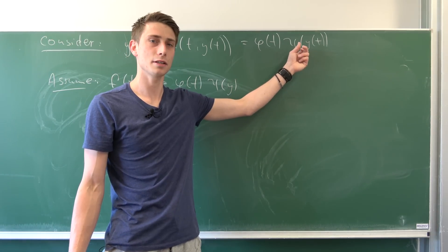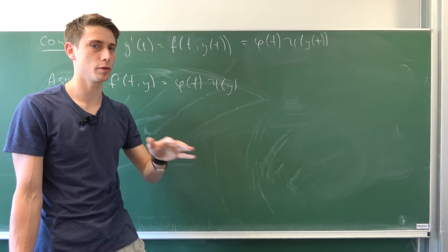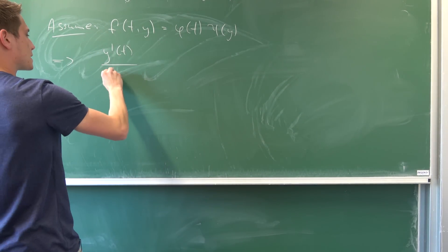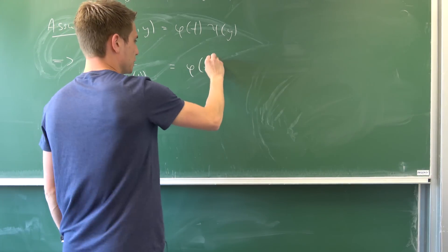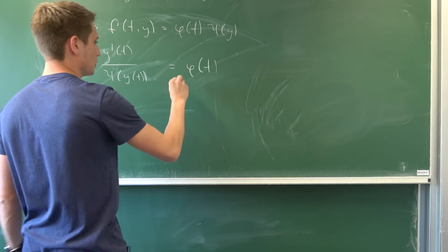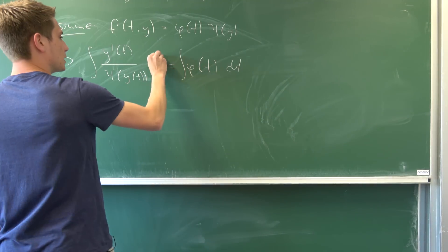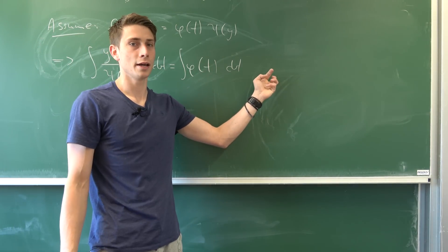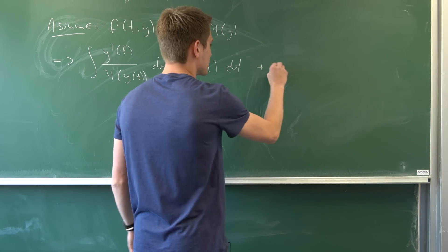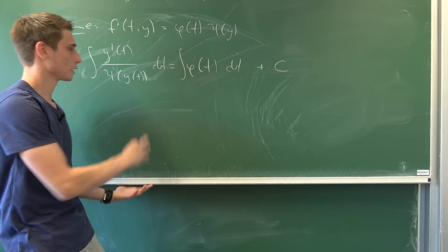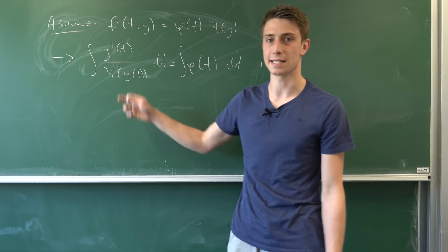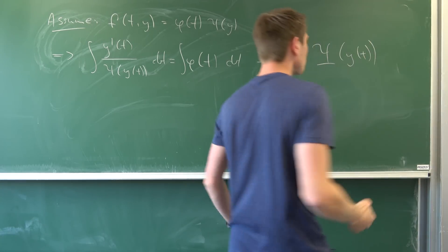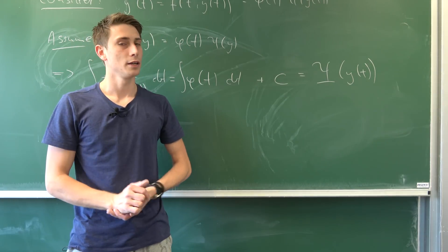We assume psi is not equal to zero — otherwise everything would be zero, which is just the trivial solution. Dividing both sides by psi of y of t, we get y prime of t over psi of y of t equals phi of t. Now we integrate both sides with respect to t without upper and lower bounds. We get a constant on each side; subtracting gives us one combined constant C. Assuming the left side has an antiderivative we call capital Psi, we get capital Psi of y of t equals the integral of phi of t dt plus C. That's the solution to our separable differential equation.